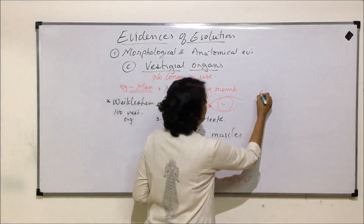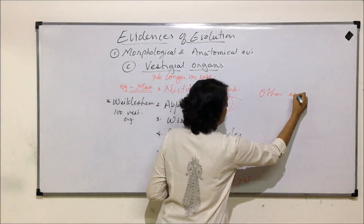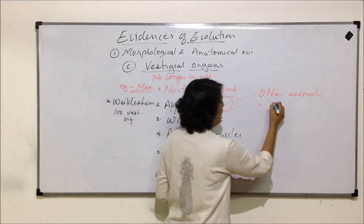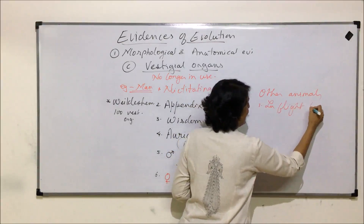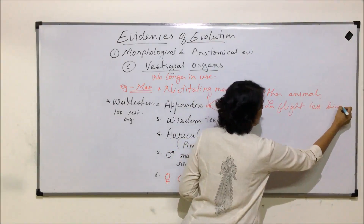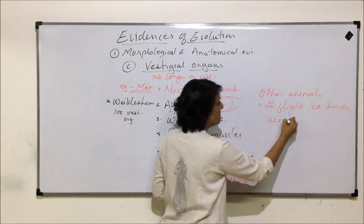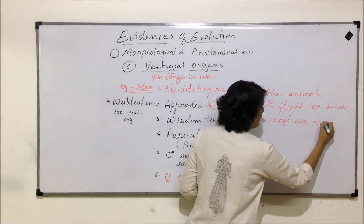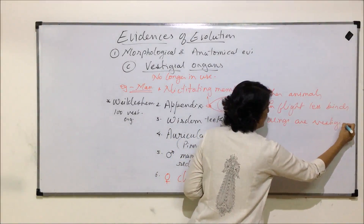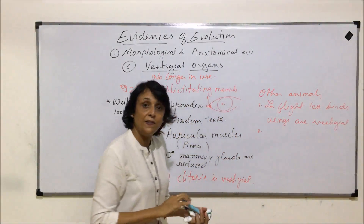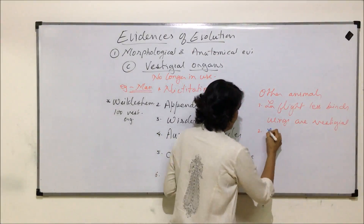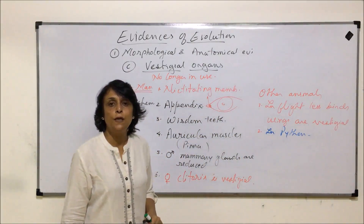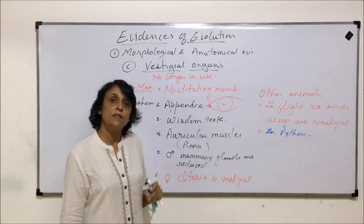In other animals, take the example of flightless birds like the ostrich. In flightless birds, the wings are very small and vestigial. In the case of python and other similar snakes, there are vestiges of the femur and pelvic girdles found.